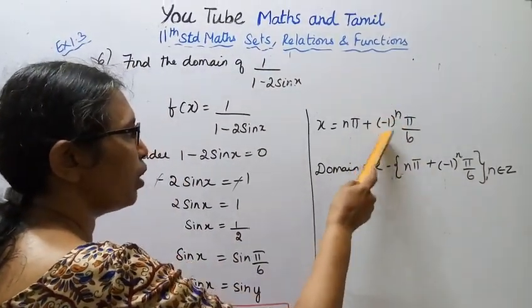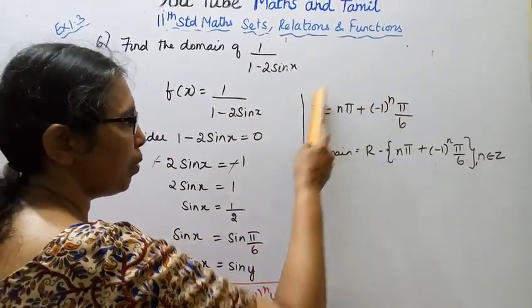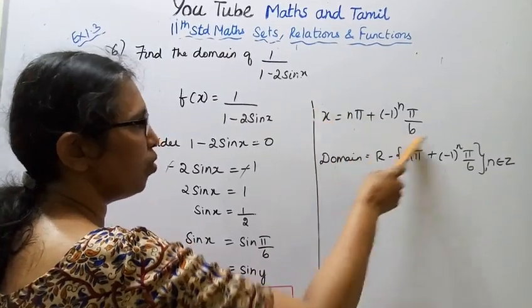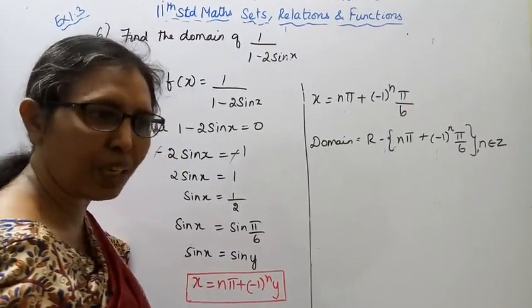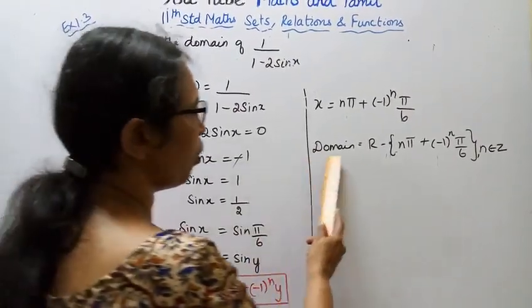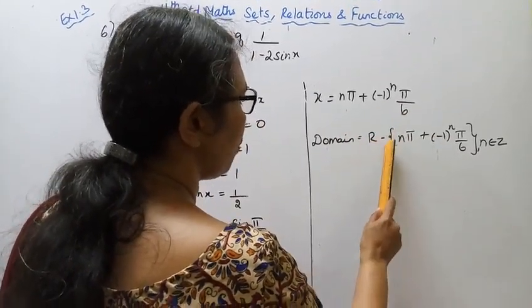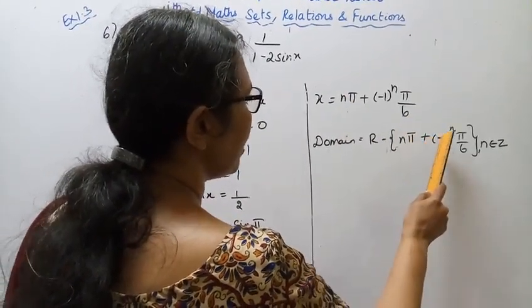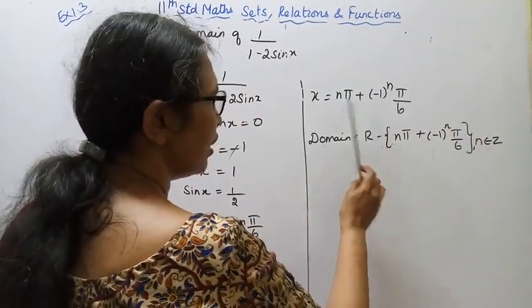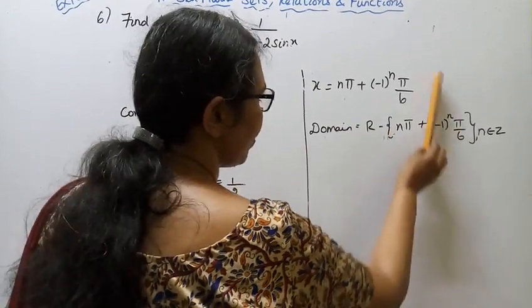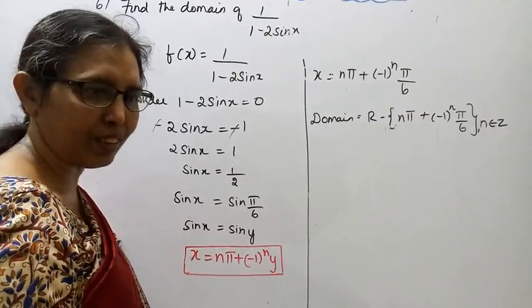Since the denominator becomes 0 at these values, we remove them from the domain. The domain is equal to R minus { nπ ± (−1)^n · (π/6) }, where n belongs to Z.